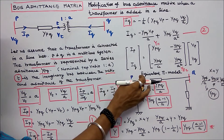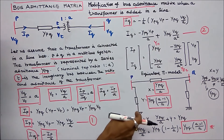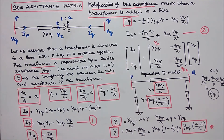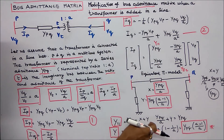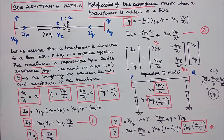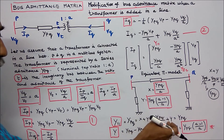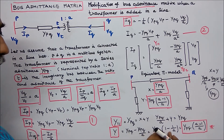This is an equivalent pi model for a tap-changing transformer. Here Y11 is equal to this admittance plus this admittance, so Y11 equals YPQ. I choose X equal to YPQ divided by A. Then YPQ divided by A plus Y equals YPQ, so Y equals YPQ minus YPQ divided by A, which equals YPQ multiplied by (1 minus 1 divided by A).